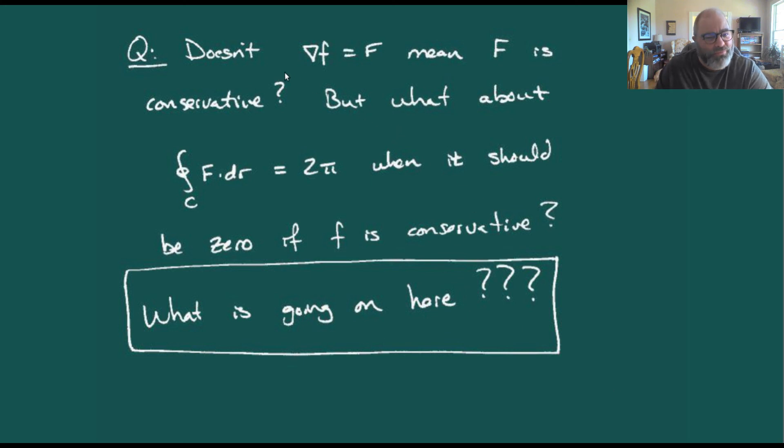So you're probably asking the question, well doesn't it being the gradient of a potential function mean that it is going to be conservative? And I'm really confused with this two pi over this line integral, and I ought to be getting zero. What is actually happening in this situation?